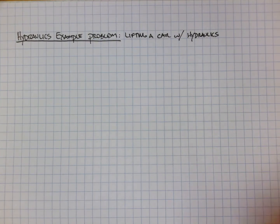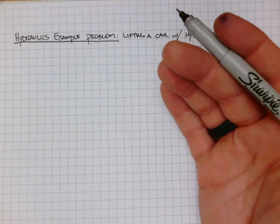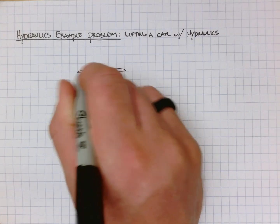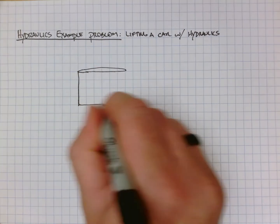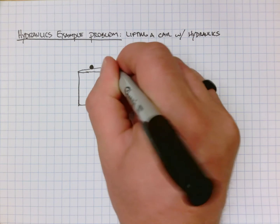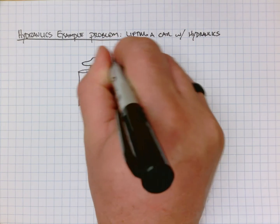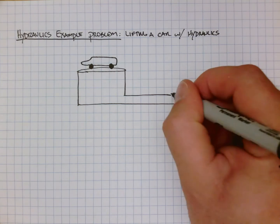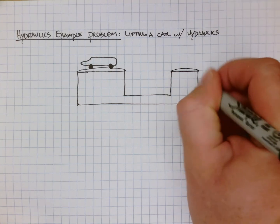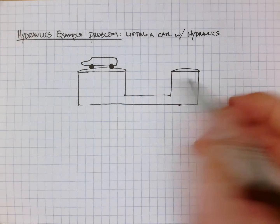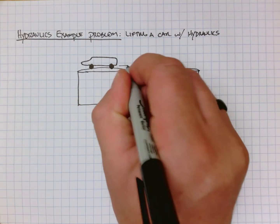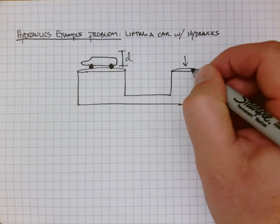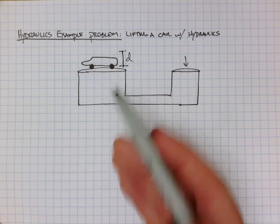The classic example in hydraulics is the idea that if we want to lift a car, what forces would go into that, and how can we use hydraulics as a benefit? If we think about a situation where we have a hydraulic setup and on one side we have a car, and on the other side we have a press where someone can input force — how can this be used as a benefit? Our goal is to lift the car a set distance d.